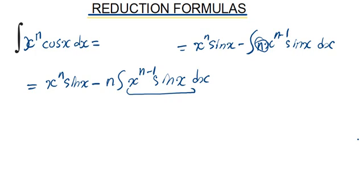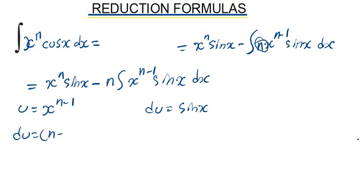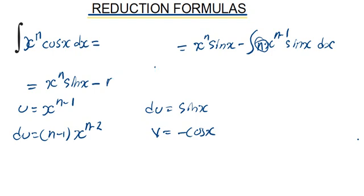So that means in this case we are going to set our u again to be equals to the algebraic function, which is x to the power n minus 1. Then our dv will be equals to sine of x. So our du will be equals to n minus 1, x to the power n minus 2. Then our v in this case will be equals to minus cosine of x.